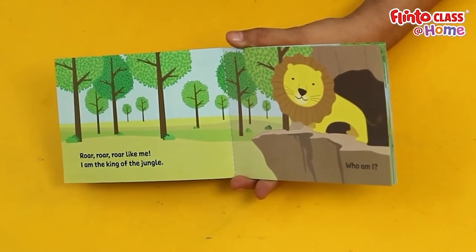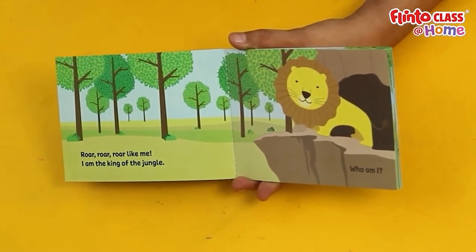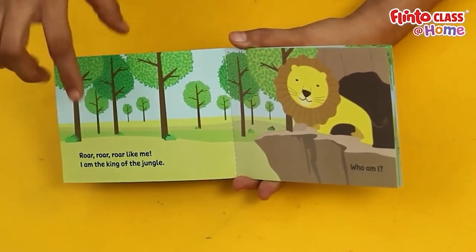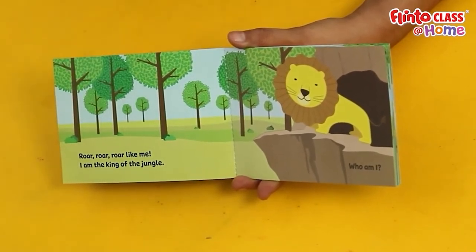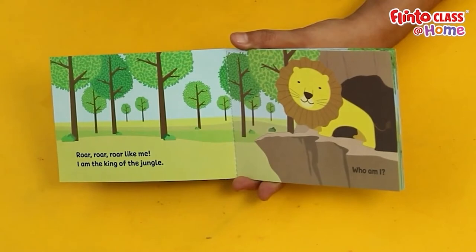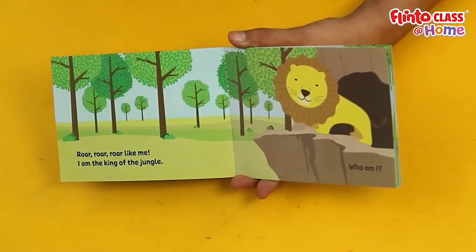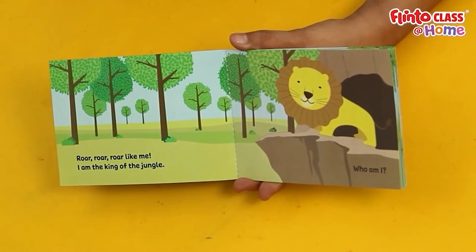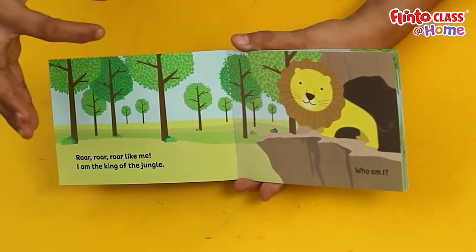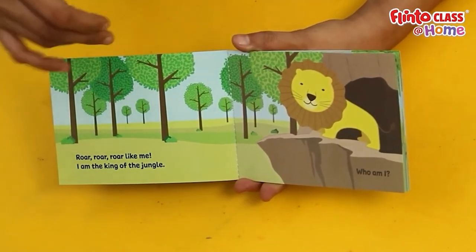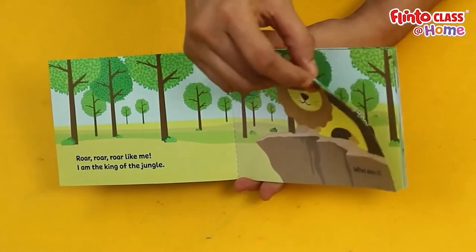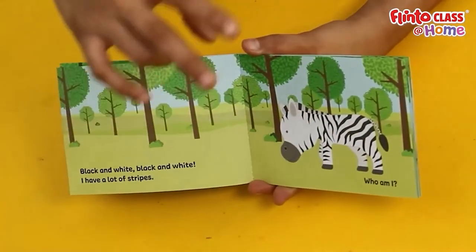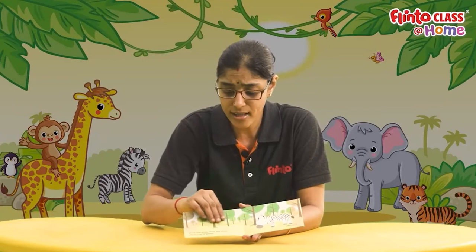The lions in the jungle say roar roar roar! Roar like me — I'm the king of the jungle! It's a lion! You're scared, right? Let's move on. Let's walk further into the jungle and see who is next.